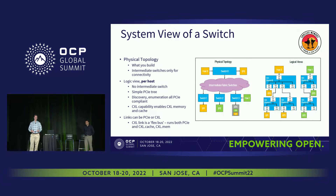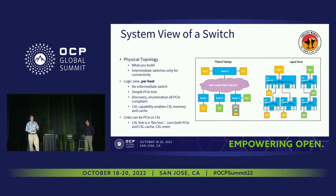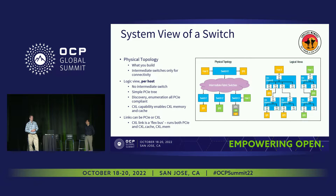With CXL 3.0, you can have multiple switches, so you can get very complex topologies. There's a purple cloud in the middle — those are switches to give even more connectivity, with more switch latency. I want to separate the physical topology from the logical view from a host. On the right side, two different hosts on that same physical topology each see a PCI Express tree — standard enumeration, standard discovery, standard driver loading.